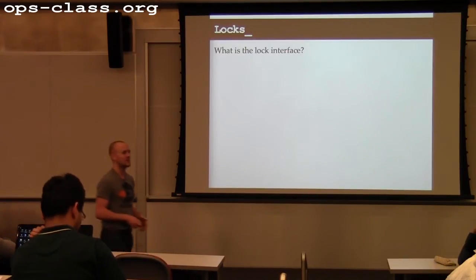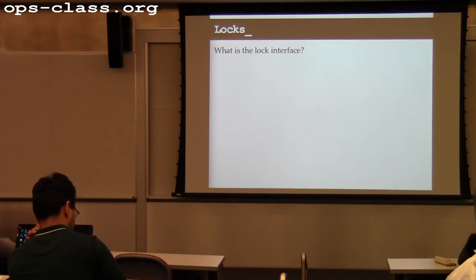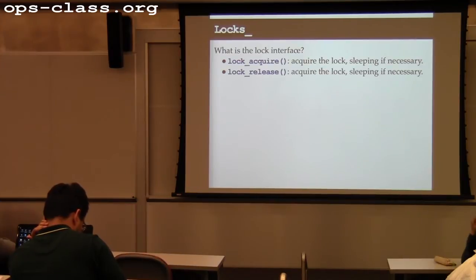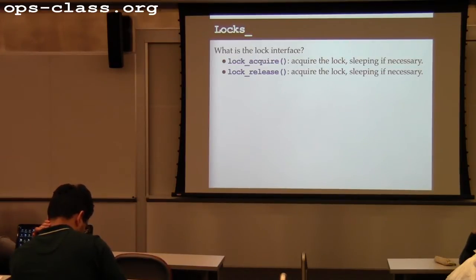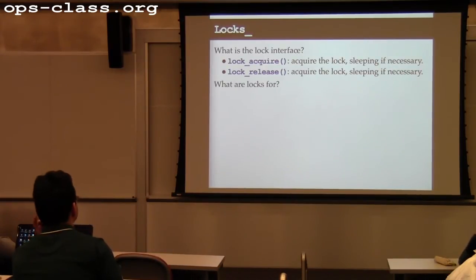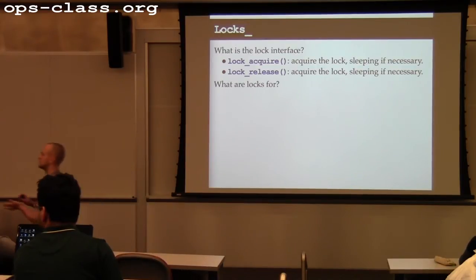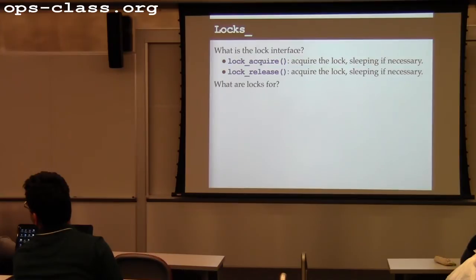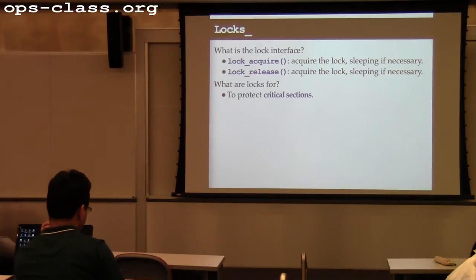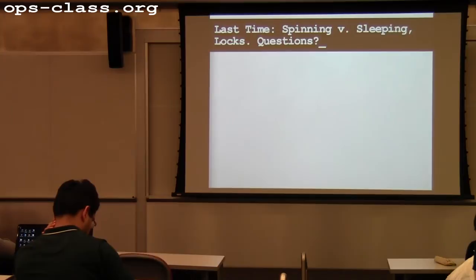The interface to a lock is acquire and release. You lock the resource when you begin using it — at the top of a critical section — and then unlock the resource when you complete using it. One very common use of locks is to protect a critical section: a portion of code that you do not want more than one thread executing. You acquire the lock at the top and drop it at the bottom.